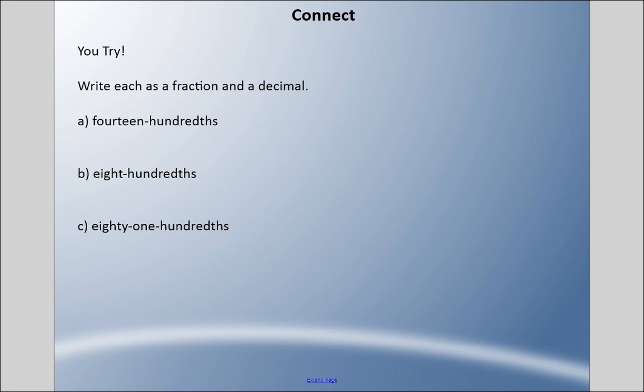I'm going to try some more here. Write each as a fraction and as a decimal. This time you're taking it from words and changing it over. Pause it, come back when you're ready. I have 14 hundredths as a fraction and 0.14 as a decimal. I have eight-hundredths as a fraction and 0.08 as a decimal. Remember, that's the hundredth spot—no tenths.